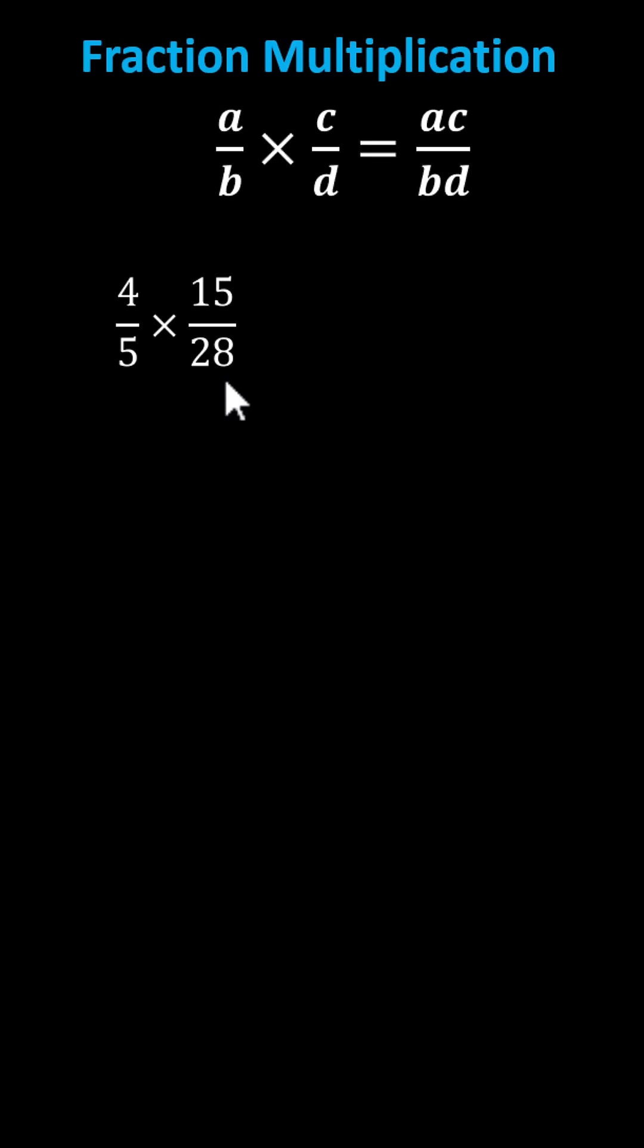One foolproof method to simplify before multiplying is to determine the prime factorization of all the numerators and denominators, and then simplify out all the common factors between the numerators and denominators.